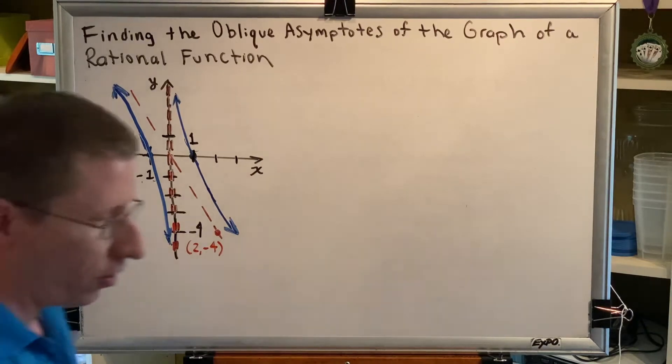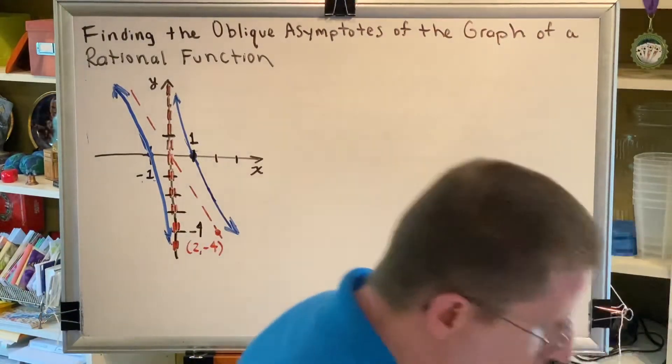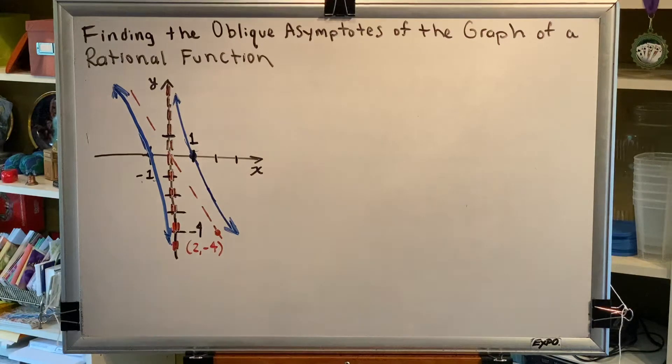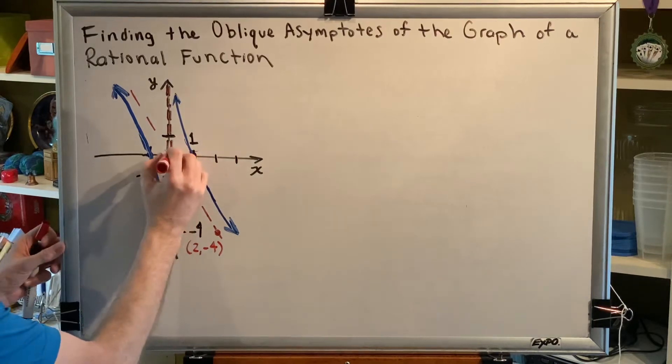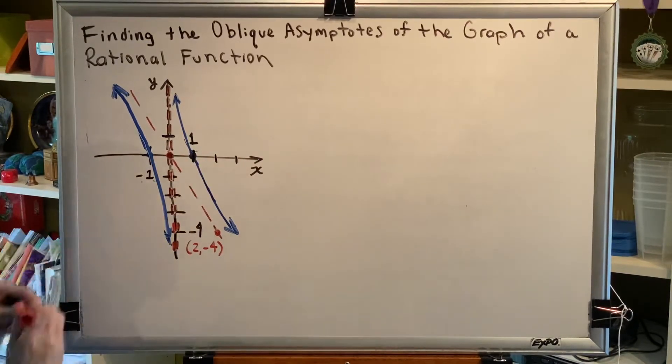To find its equation there are a couple of things that we need to know. To write the equation of a tilted or slanted line you need a slope and a point. So it just so happens that we know two points that are on this particular oblique asymptote.